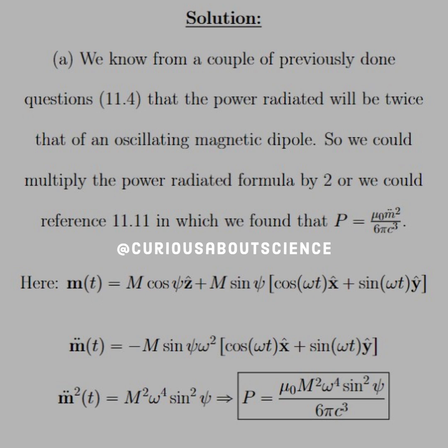So we let little m of t be big M, the Earth's magnetic dipole, cosine phi, the angle between geographic and magnetic. So we have that to the polar angle, and then we have to apply the sine to the cosine omega T. Again, that's the axis it rotates on, and sine omega T y hat.